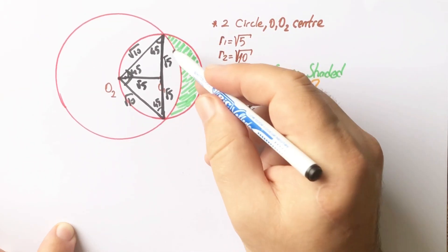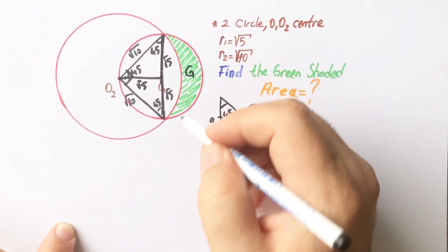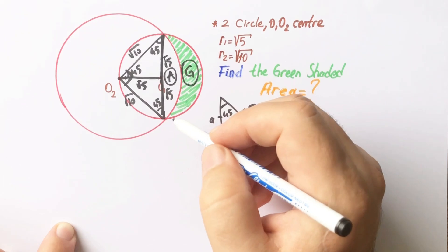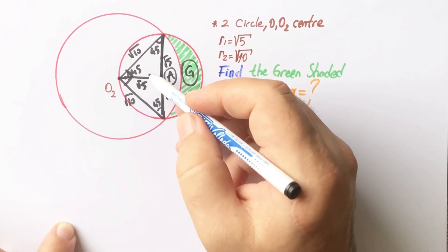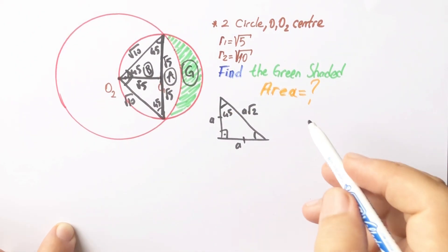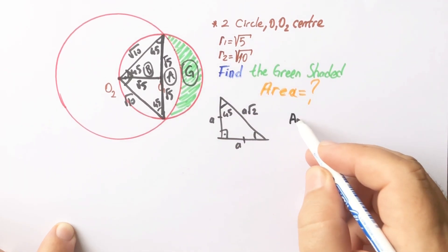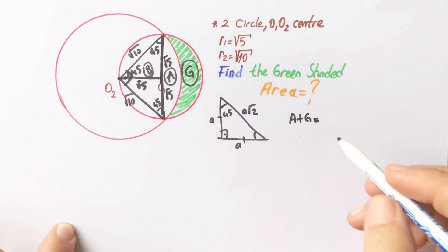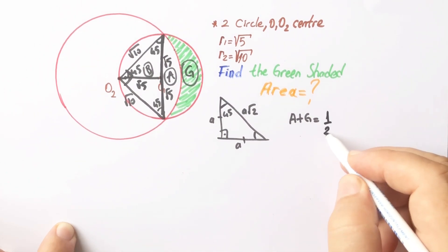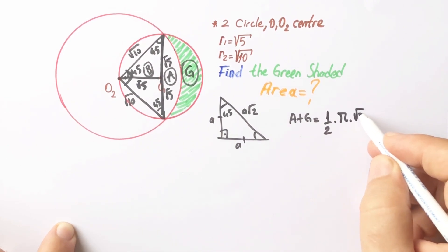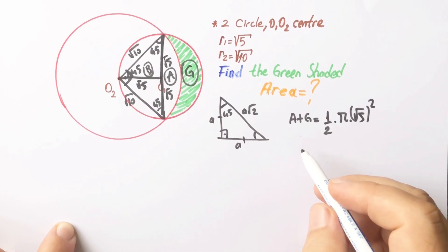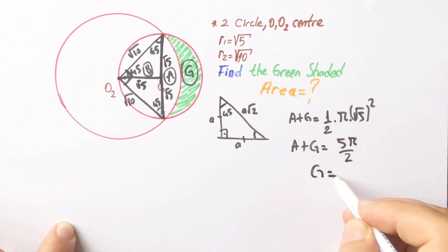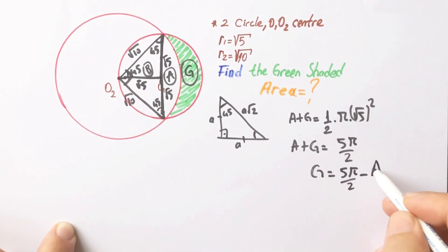Let's call the green shaded area uppercase G, this area uppercase A, and this triangle area uppercase B. We know that A plus G equals half of the small circle's area: one half times π times (√5)², which means A plus G equals 5π/2. So G equals 5π/2 minus A.